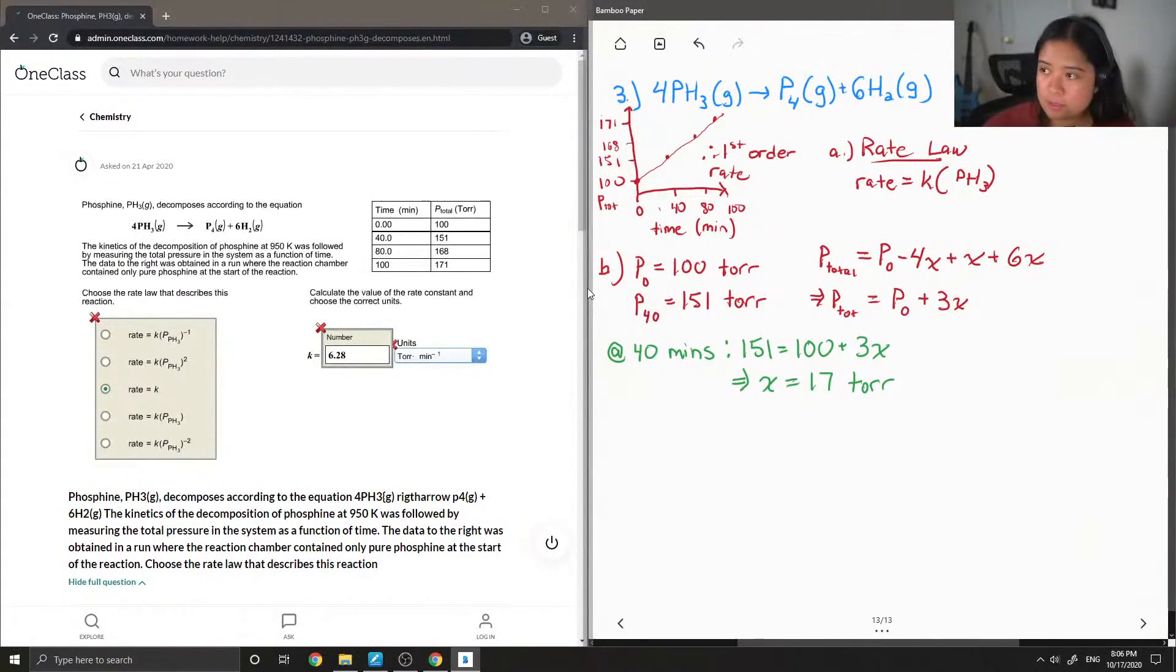Okay, so from here I can now calculate the concentration of the phosphine at 40 minutes. So this is going to be our initial minus the 4, and then I'm going to sub in 17, and then I'm going to get 32 torr.